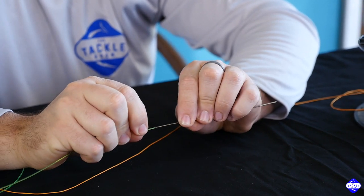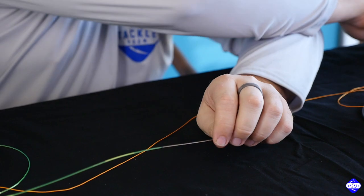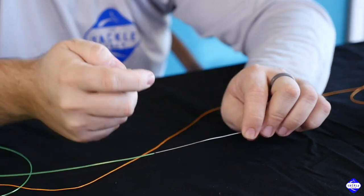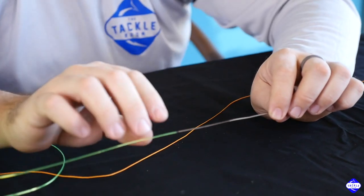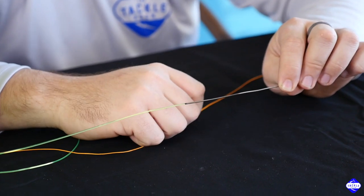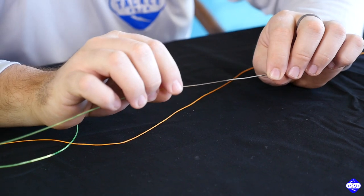Run that mono in the needle as far as you can until it stops. And then it helps to take a lighter and just hit it real fast. And what that does, it just heats the mono up and causes it to stick inside the needle so the mono doesn't pull out.